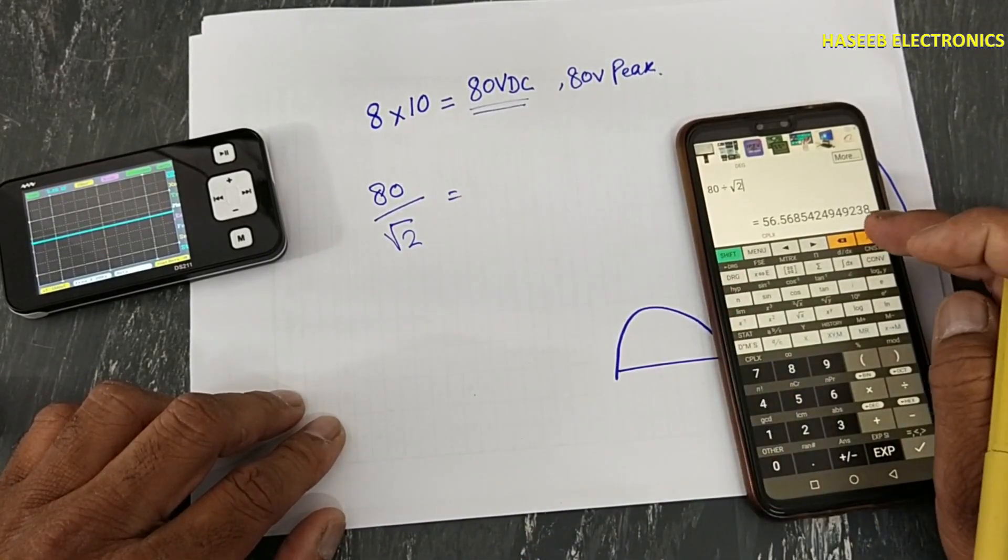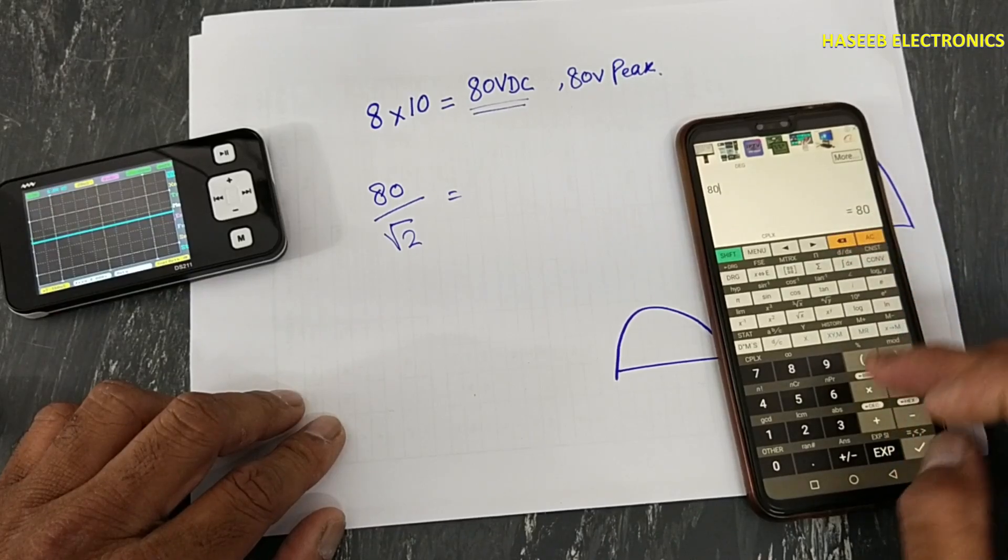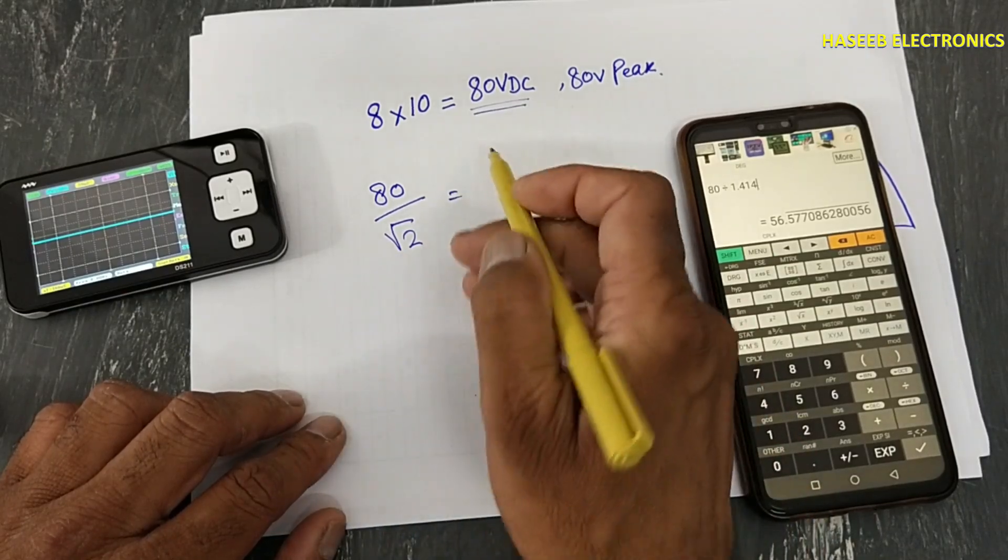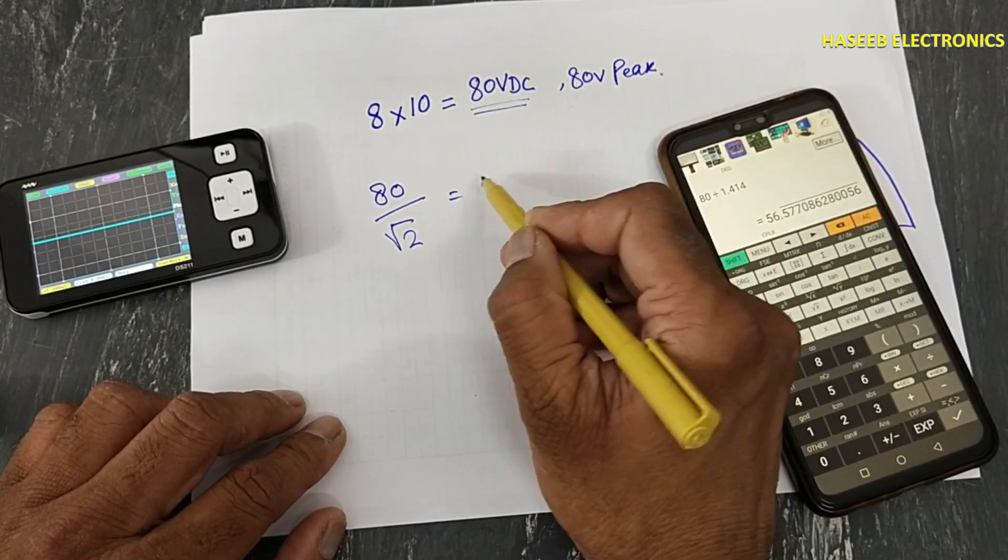Or we can divide it by 1.414. It is 56 volts.